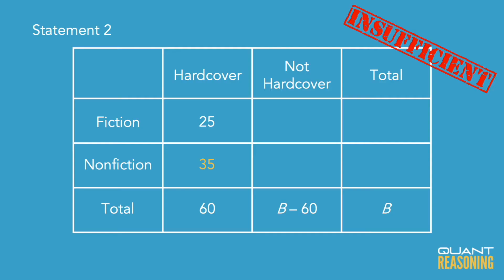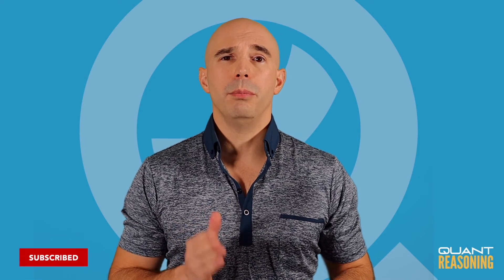But with statement two on its own, there's no way for me to find the total number of books. So statement two is not sufficient on its own either, and we can eliminate B.